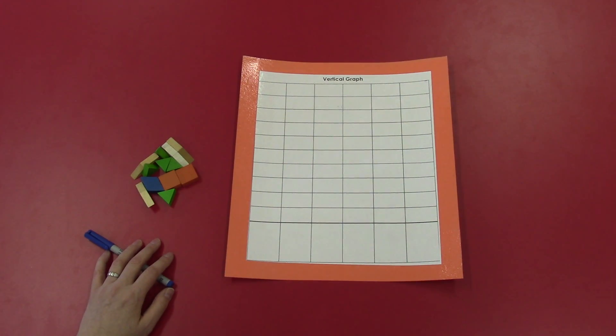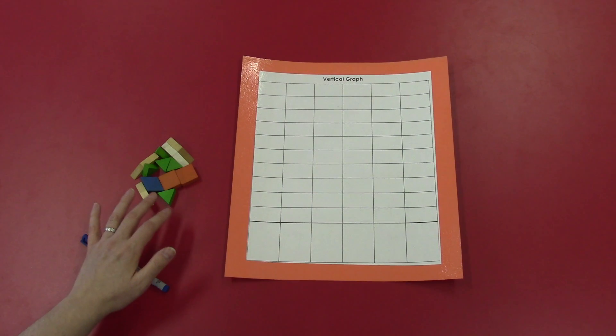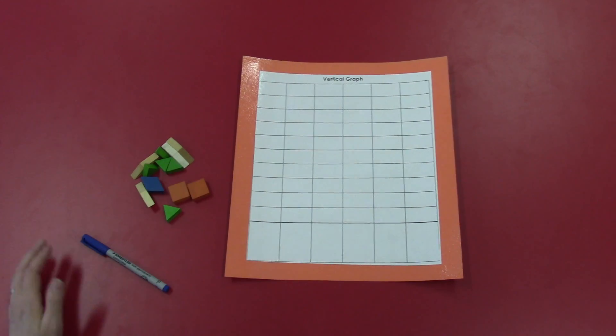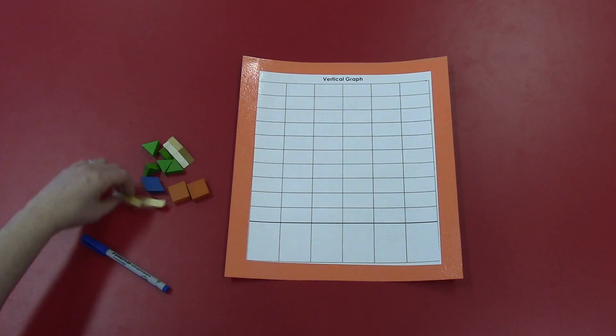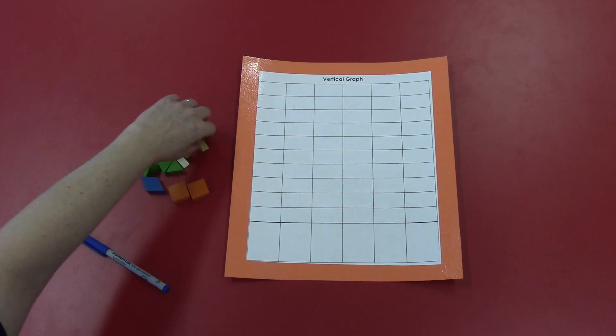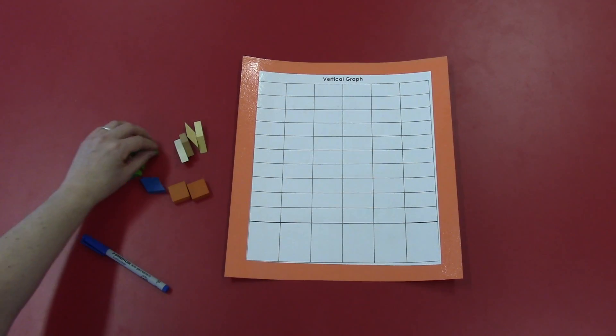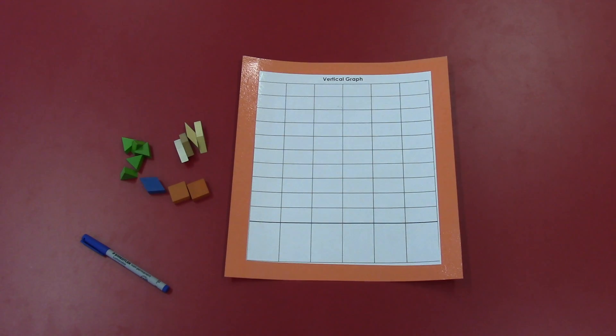Now the first thing, we want to observe what we have and we want to sort it and organize it. Think about what we're going to graph. I'm going to look at the attributes that these objects have. They have colors, they have sizes, and they have shapes. I'm going to graph by color. So I'm going to just sort them into colors here really quickly. And now I'm ready to graph.